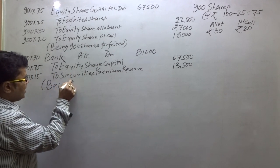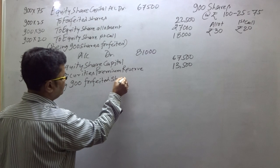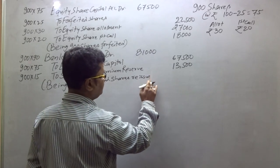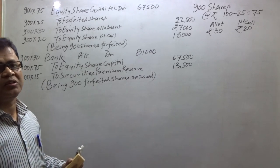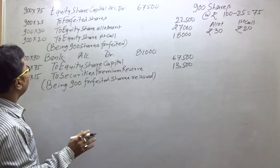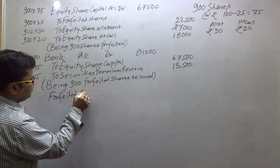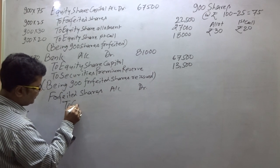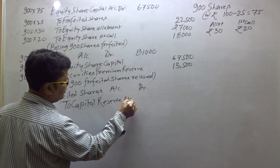Being 900 forfeited shares reissued. Now the next entry: Forfeited Shares Account debit, to Capital Reserve Account. The gain on reissue is transferred to the Capital Reserve Account.